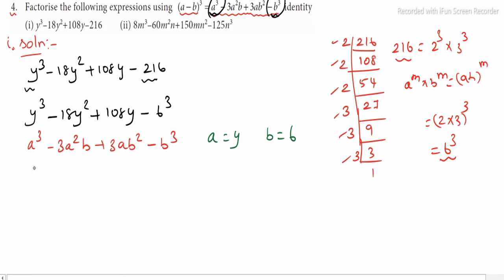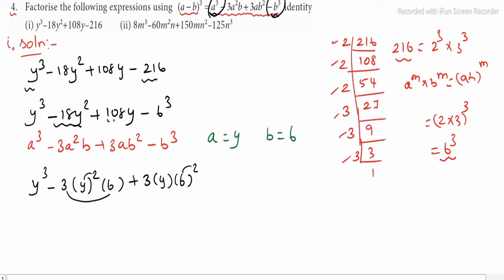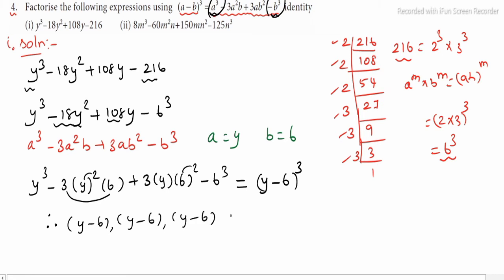Now let's write the expression clearly. y cube minus 3 times y squared times 6 — since 3 times 6 is 18 — gives minus 18y squared. Plus 3 times y times 6 squared: 36 times 3 is 108, so plus 108y. Minus 6 cube. Looking at this expansion, a minus b whole cube with a equals y and b equals 6 gives us the three factors: y minus 6, y minus 6, y minus 6.